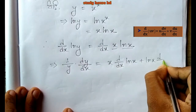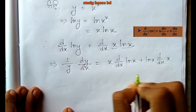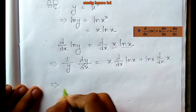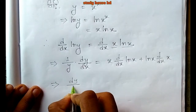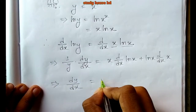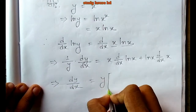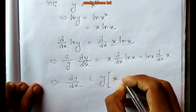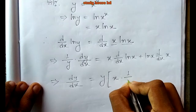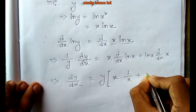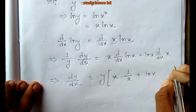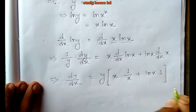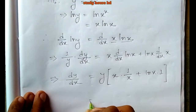Applying the product rule for d/dx of x ln x: we get x times 1/x plus ln x times 1, which simplifies. The final answer becomes dy/dx equals x to the power x times (1 plus ln x).